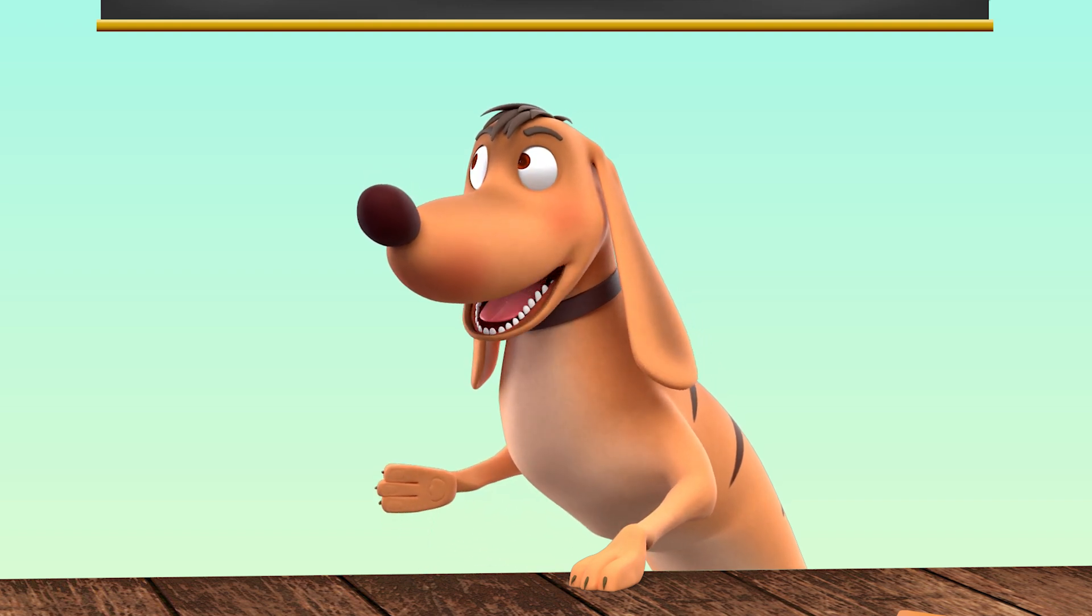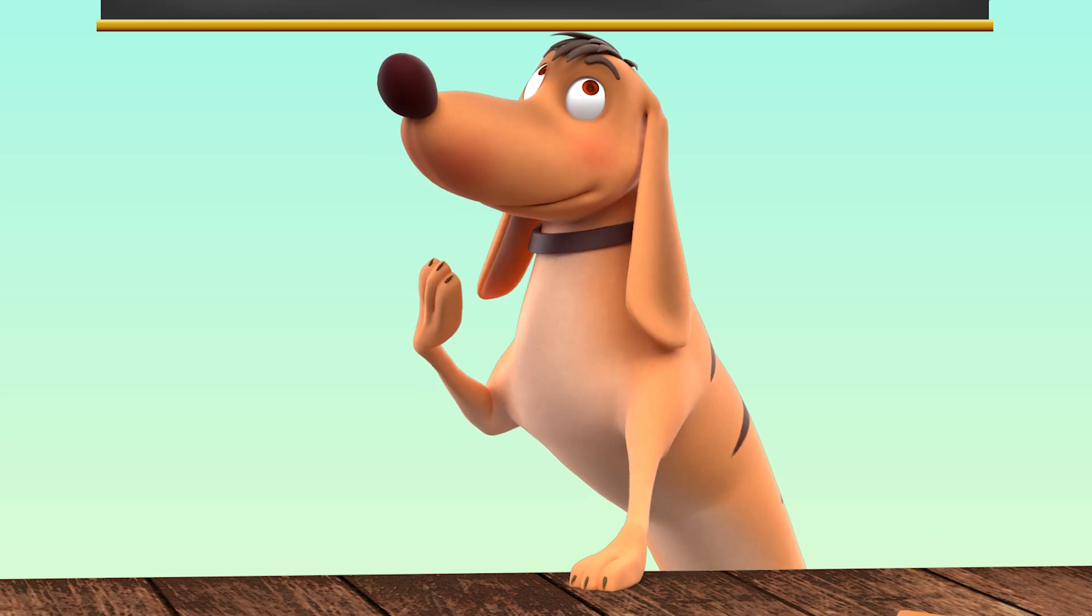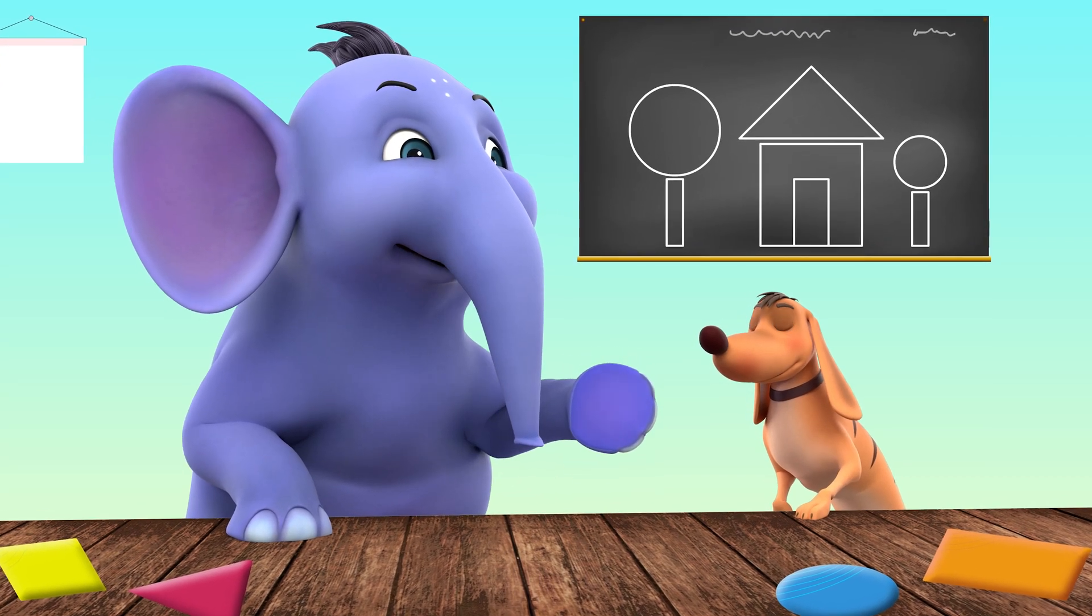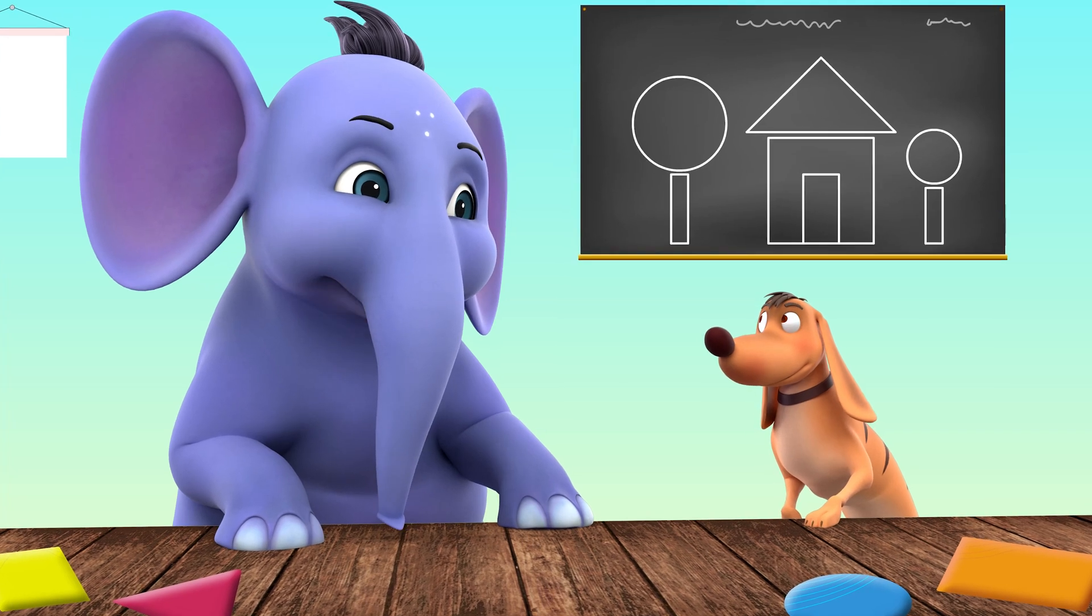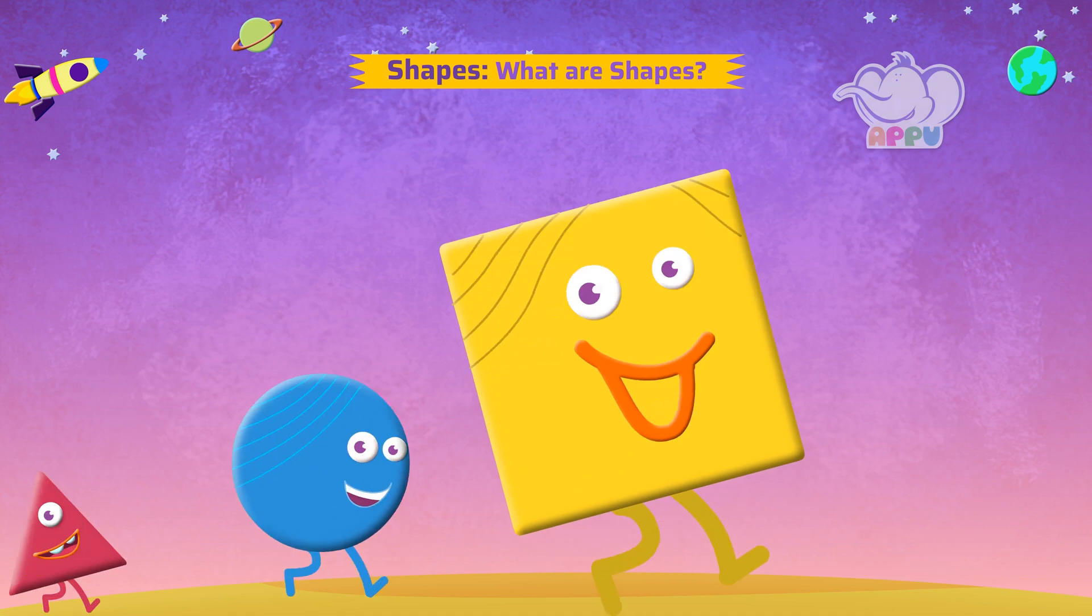Hey Appu, why are some things round and some pointed? Because different objects have different shapes. Let me show you. What are shapes?